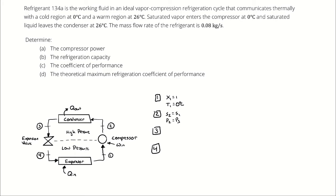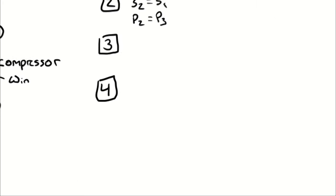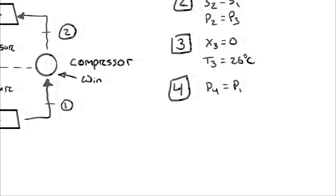The problem states that saturated liquid leaves the condenser at 26 degrees Celsius. The condenser output is state 3, so state 3 has a quality of zero and a temperature of 26 degrees Celsius. At state 4, the pressure equals the pressure at state 1 because the process from four to one is isobaric, and the enthalpy at state 4 equals that at state 3 due to the isenthalpic expansion valve.